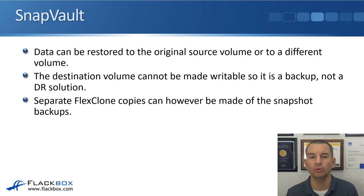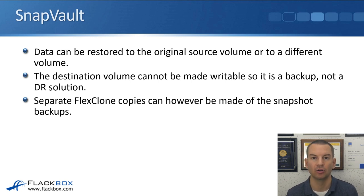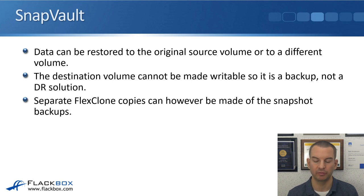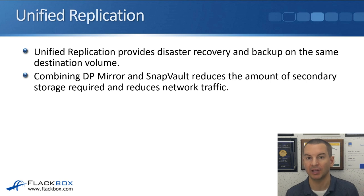With SnapVault, data can be restored to the original source volume or to a different volume if you've lost the main site. The destination volume cannot be made writable, so it's a backup solution, not a DR solution unlike SnapMirror DP mirrors. Separate FlexClone copies can, however, be made of the snapshot backups. Both SnapMirror and SnapVault use the SnapMirror engine under the hood.